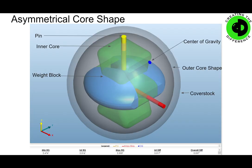Now we'll talk a little bit about the core shape. We're going to use an asymmetrical core shape — this happens to be the Track Paradox. The yellow indicates the pin, located on the top of the bowling ball surface, indicating the center of the core shape. You've got an inner core here and a weight block here, which is actually a different density piece than the inner core. This is called the center of gravity, also marked on the surface of the bowling ball, as is the mass bias marking — the intermediate differential.